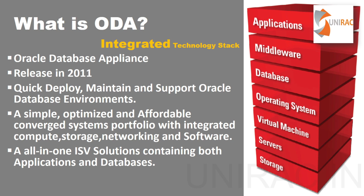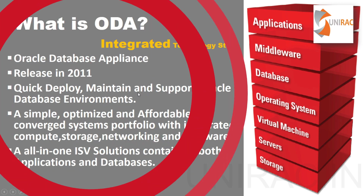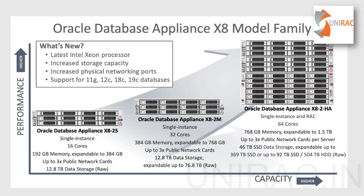You can see the X8 model family — different machines are available. The Oracle Database Appliance X8 2S is a small single-instance model with 16 cores, 12.8 terabytes of storage, and RAM expandable up to 384 GB with a minimum of 192 GB, plus 3 public network cards. The X8 2M is a medium model with 32 cores, RAM expandable up to 768 GB, and a maximum of 76.8 terabytes of raw storage.